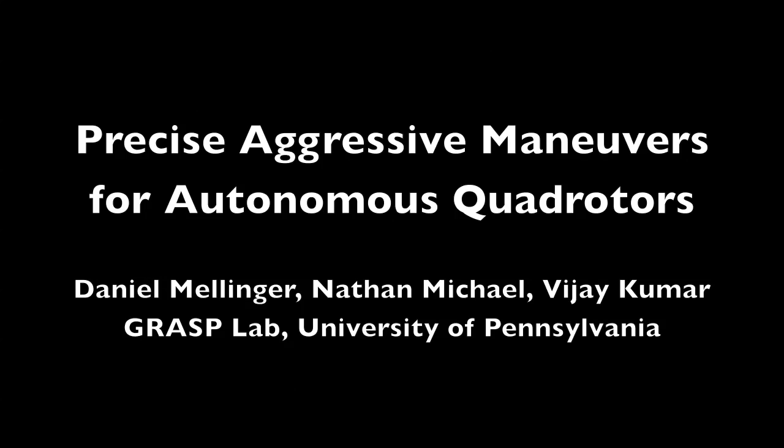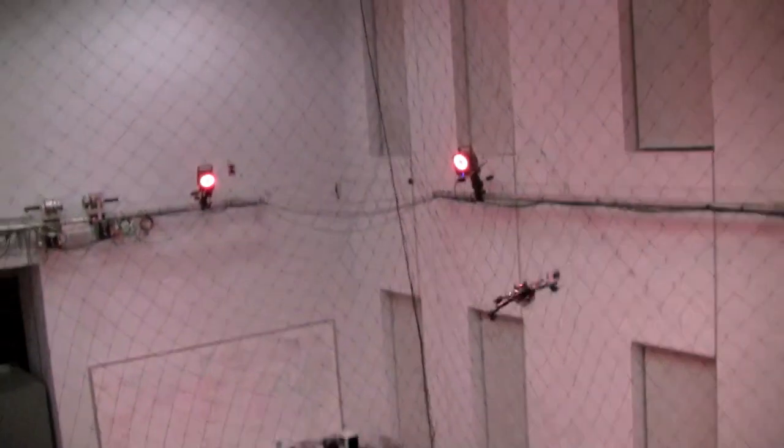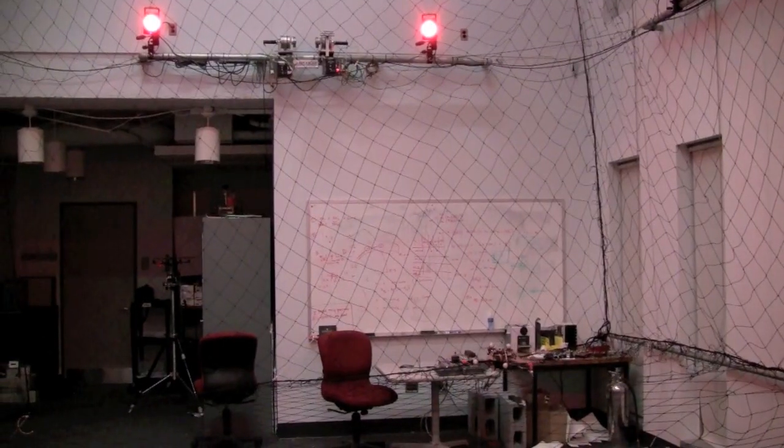This video presents autonomous control capabilities for a quadrotor helicopter. We use a 20-camera Vicon system and an onboard IMU for state estimation.